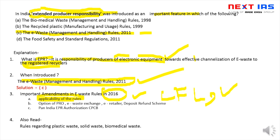E-waste को manage करने के लिए Producer Responsibility Organization और E-waste exchanges हैं। E-retailers को भी integrate किया गया है। एक बहुत अच्छा idea है deposit refund scheme — जब कोई नई electronic item purchase करेगा, वो एक amount deposit करेगा, जो refund हो जाएगी जब life cycle complete होने पर वो item वापस submit करेगा। EPR की authorization पहले State Pollution Control Board देता था, अब इसे Central Pollution Control Board के अंतर्गत कर दिया गया है।